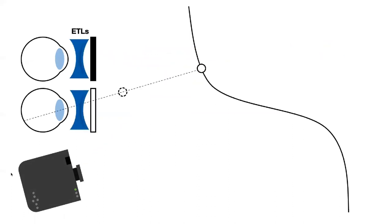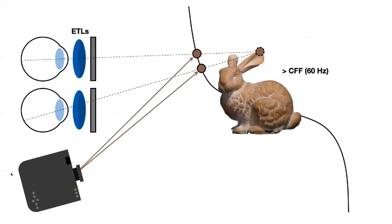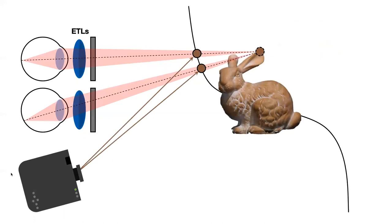We set the frequency of the focal sweep to be higher than the critical fusion frequency, so that the observer perceives the time integral of the scene appearances during the sweep period. And consequently, our technique can provide the correct binocular and focal cues.